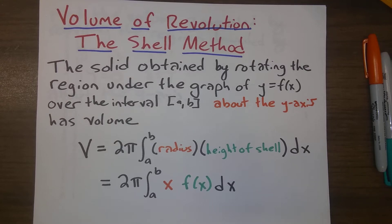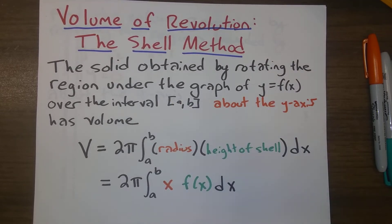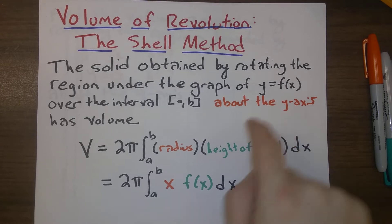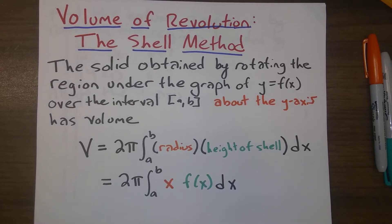Here's the formula we came up with at the end of the last video. So if we are rotating a region under the graph of y equals f(x) over interval a comma b about the y-axis, we can find that volume using cylindrical shells, and here's the formula. V equals 2π times the integral from a to b of x times f(x) dx.